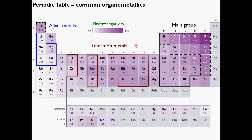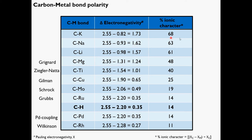It's a good point to review carbon-metal bond polarity. The table shows carbon-metal bonds, the electronegativity difference, and percent ionic character. Carbon-potassium and carbon-sodium compounds are extremely reactive and difficult to handle. Moving down to organolithiums and organomagnesiums, we've seen synthetically useful chemistry. Using ionic character as a surrogate for reactivity, we can see that we're getting into many named organometallic reactions here — Grignard and Gilman reagents.